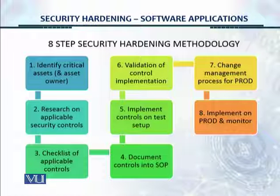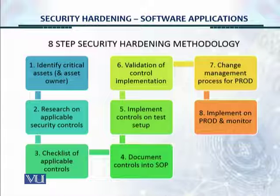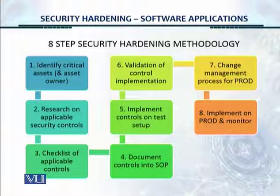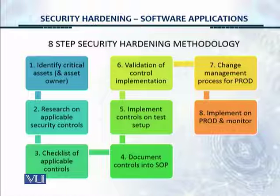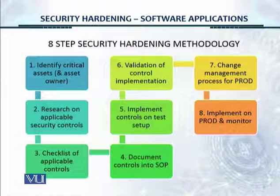If a software application has HR confidential salary data, it's more critical than one providing a project management dashboard. Step two: research the controls applicable for that asset — for example, an ASP.NET application developed internally. Step three: make a checklist of applicable controls and document them in an SOP. Step five: implement the controls in a test environment, because we cannot make changes directly in the production environment. Step six: the information security team validates that all agreed controls have been implemented correctly.